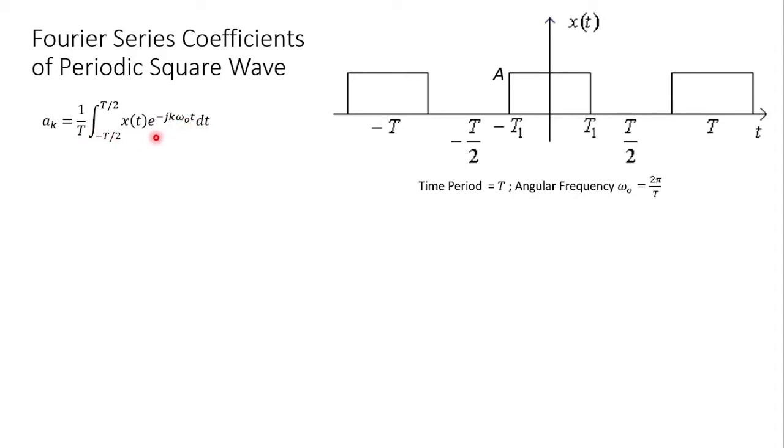In order to solve this analysis expression, we observe that the signal is appearing from -t₁ until t₁, so we can simplify this integration from -t₁ to t₁. Similarly, x(t) has an amplitude of A, so we set an amplitude A here.